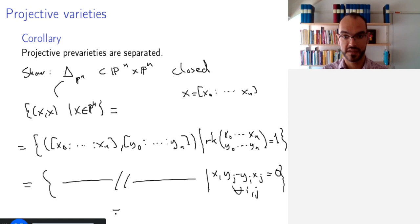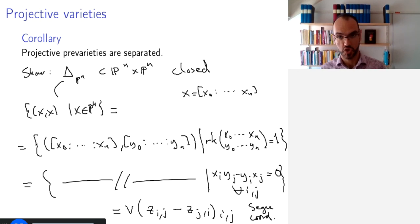But writing this in Segre coordinates, we recognize this exactly as the vanishing set of z_ij minus z_ji for all possible i, j. So this is in Segre coordinates. And so this is closed in the image of P^n times P^n under the Segre embedding. And because the image is isomorphic to P^n times P^n, we know that this is closed. This proves that P^n is separated, therefore a variety. And therefore any projective pre-variety, so any closed subset of this, will also be separated.